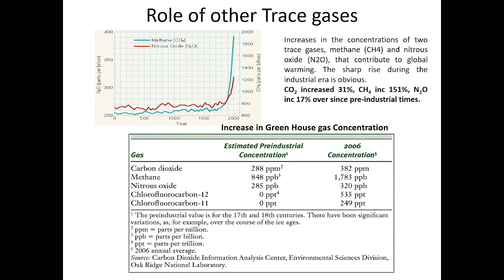Apart from carbon dioxide, methane and nitrous oxide are also potent greenhouse gases whose concentrations have increased from the pre-industrial period to the current period. There has been an increase in CO2 of more than 30%, while methane has gone up by more than 150%, and nitrous oxide by 15 to 20%.